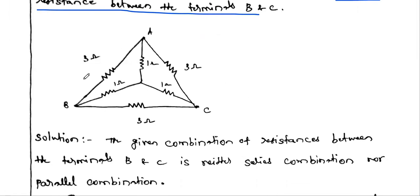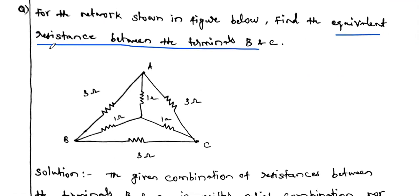This is a network, not a circuit. A circuit means the interconnection of some elements forming a closed loop. This network consists of only passive elements — it does not have any energy sources, voltage sources, or current sources. For this network, we have to find the equivalent resistance — the total resistance between terminals B and C.